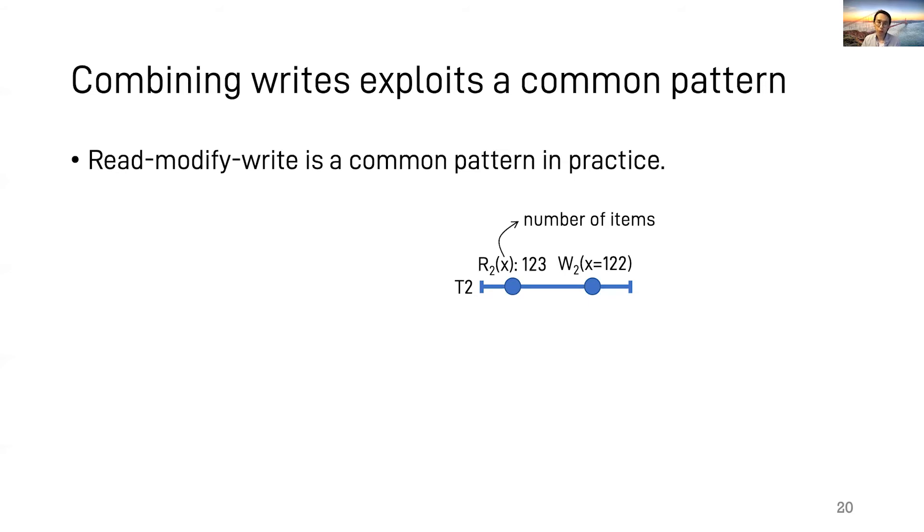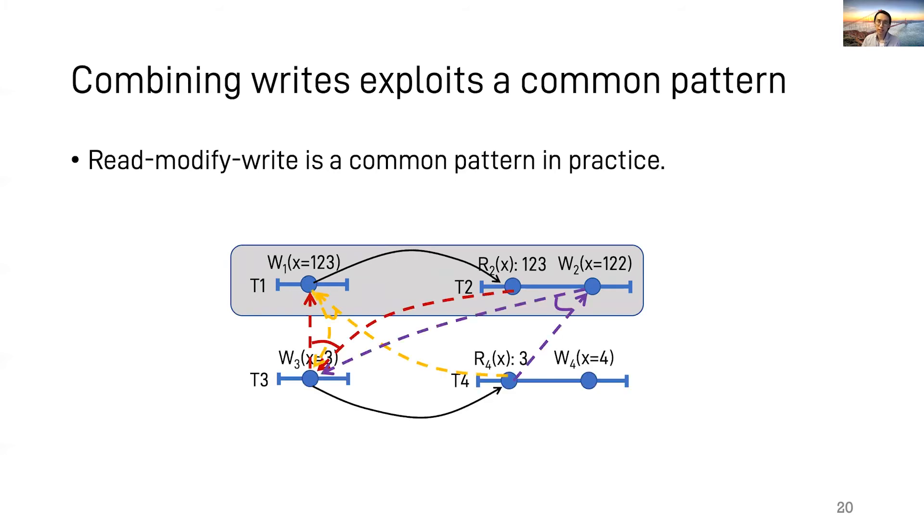For example, during shopping, a purchasing transaction is a read-modify-write transaction. It reads the number of items in stock, decreases the number by one, and writes it back to the database. From such a transaction, Cobra knows its immediately previous write to the key X. So Cobra can eliminate constraints that order other writes in between the two consecutive writes.